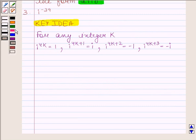Let's now start the solution. Given complex number is iota raised to the power minus 39, and this is equal to 1 upon iota raised to the power 39. And this is equal to 1 upon iota. We can write 39 as 4 into 9 plus 3.